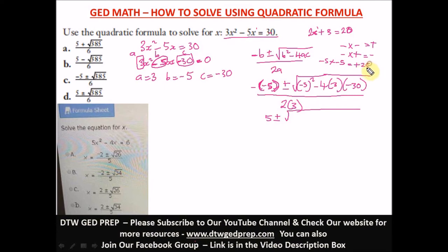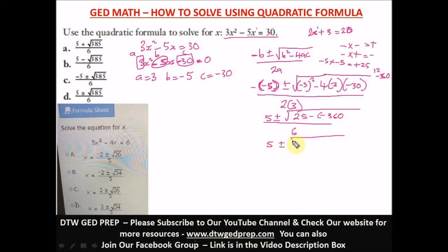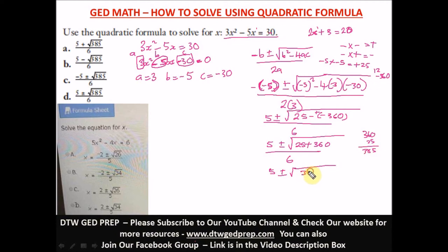Inside the square root: negative 5 squared equals positive 25. Then minus 4 times 3 is 12, times negative 30 gives negative 360. But minus times minus gives a positive, so we have 25 plus 360 over 6. That gives us 5 plus or minus the square root of 385 over 6. So the right answer option is option D.